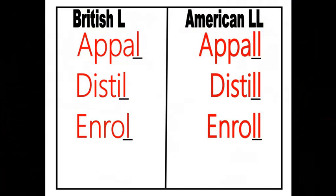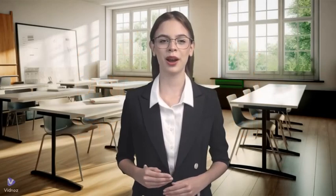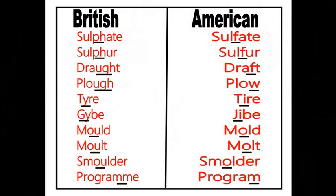American English doubles the 'l' in some words where British English does not. Examples include: appall, distill, enroll. Here are other examples of words showing differences between British and American spellings: sulfate, sulfur, draft, plow, tire, jibe, mold, smolder.